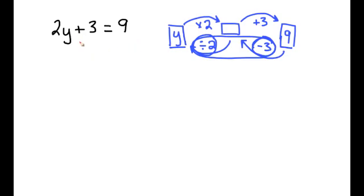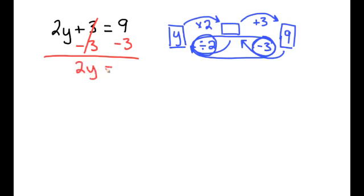If we follow our steps, the first thing we have to do is undo our addition step. So we will subtract three from the left, and the property of equality says to subtract three from the right. Those cancel out, leaving us with 2y on the left, and nine minus three is six on the right. The next step — we can see this is now a one-step equation — two times y.